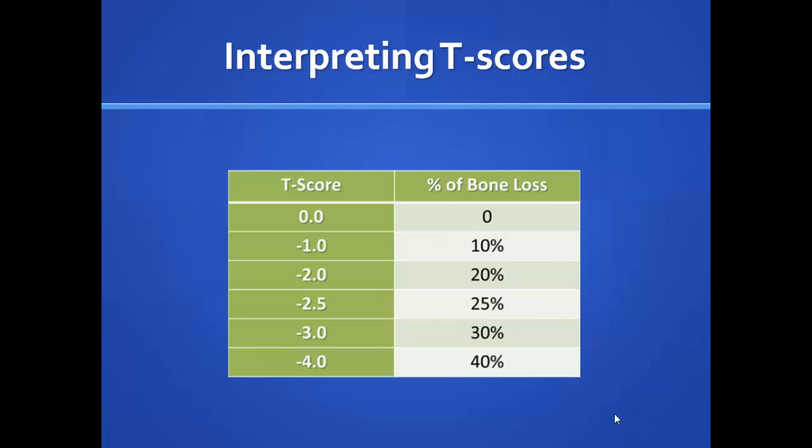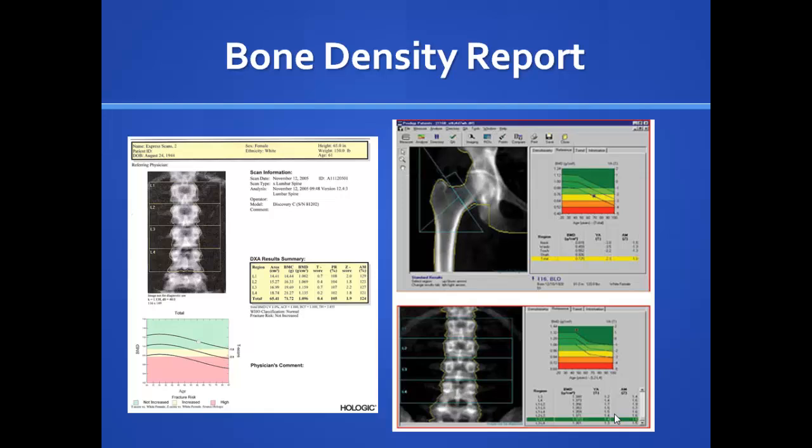The T-score is based on a bell curve with standard deviations from the mean. Minus 1 equals about 10 percent bone loss; minus 2 is 20 percent loss; minus 2.5 is 25 percent — the threshold for osteoporosis. Minus 3 is 30 percent loss and minus 4 is 40 percent loss. The bone density report shows measurements of L1 through L4 in the lower spine, the femoral neck, and total femur — each given a separate score.